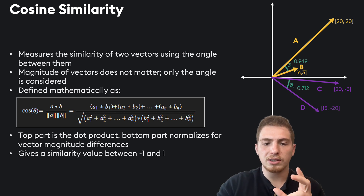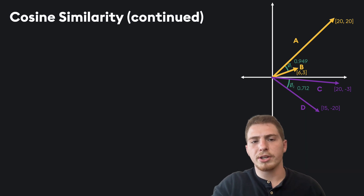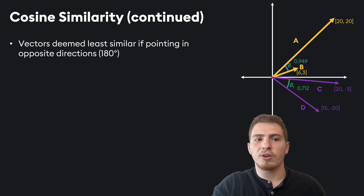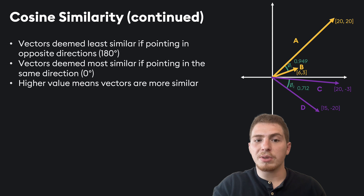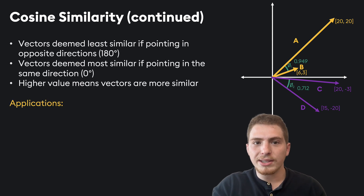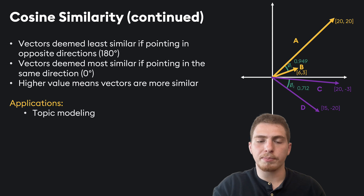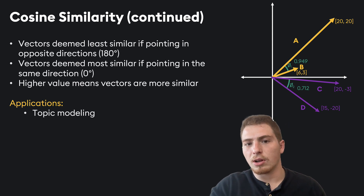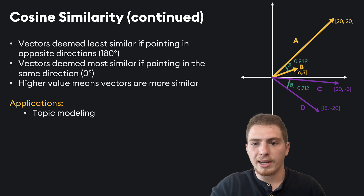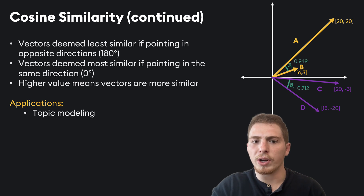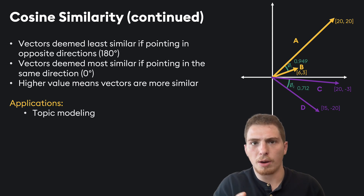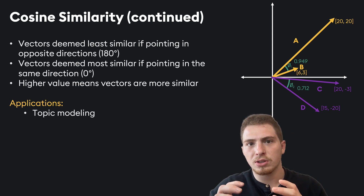The result is a similarity value between negative 1 and 1. Just like dot product, vectors are deemed least similar if pointing in opposite directions and most similar if pointing in the same direction — a higher value means vectors are more similar. One application is topic modeling, where every vector represents a lot of different topics or ideas. Cosine similarity will kind of ignore outliers in terms of the strength of individual topics, so if one topic is represented extremely strongly, that won't affect the results too much.